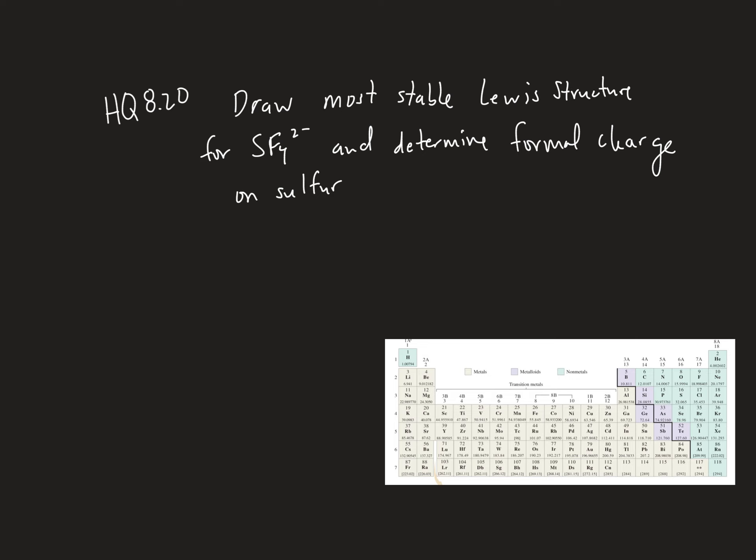Sulfur is group 6, so it has 6 valence electrons. We've got 4 fluorines, which have 7 valence electrons each, because fluorine is group 7, just like sulfur is group 6.